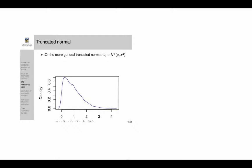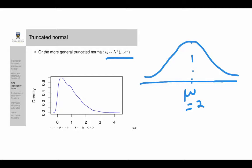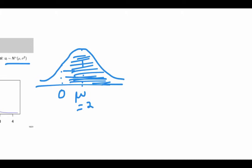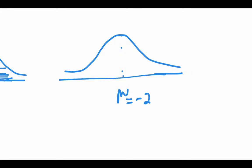Another common assumption is the truncated normal distribution. Here U_i comes from a distribution whose mean is not zero — for example, mu could be two. Since U_i must be positive, it comes from only the positive portion of that distribution. You could also have a truncated normal where mu is negative, say −2; since U must always be non-negative, it still comes from only the positive portion of the distribution.